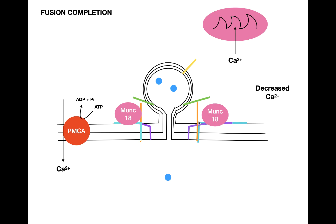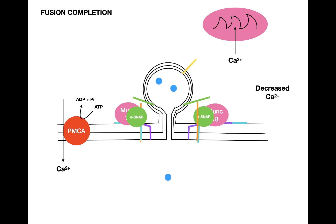More and more neurotransmitters are being released into the synapse. To reset the cycle, we have to dissociate the entire complex. A protein called alpha-SNAP comes in and binds to the complex, providing a binding site for another protein called NSF.